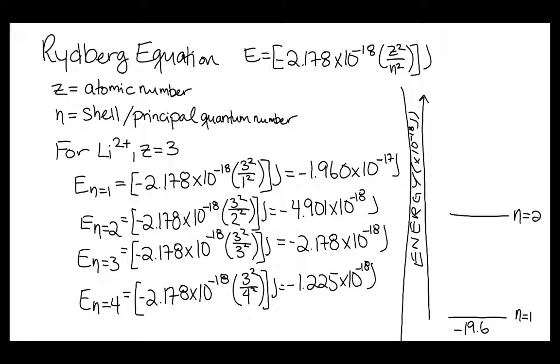Next we will have the n equals 2 shell, which has a value of negative 4.901. And so as we can see, as we plug in the n equals 3 and the n equals 4 shells, those shells start to get closer and closer together, and the energy difference between those gaps actually becomes smaller and smaller.